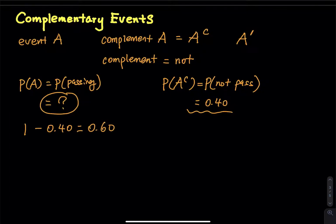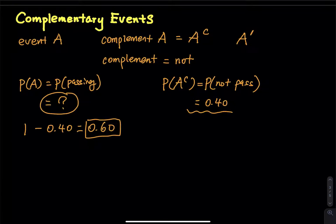So I just saved you 10 hours. The probability of A is extremely difficult to find, but the complement is easy to find. So why not just find the complement? And since you are looking for event A, you take 1 minus the complement, then you get the probability of the event you are looking for.